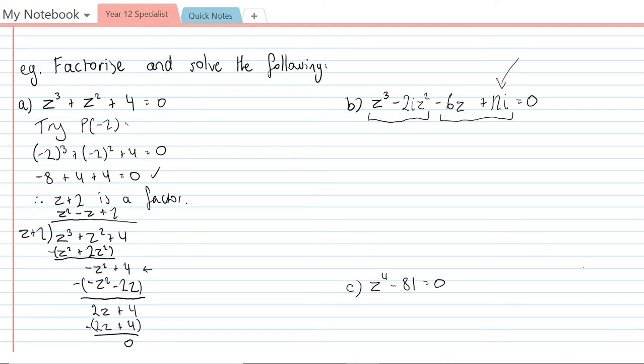First thing I'm going to do is I'm going to take out a common factor from the first part which would be z squared. I'm going to take z squared out, I've got z minus 2i left.